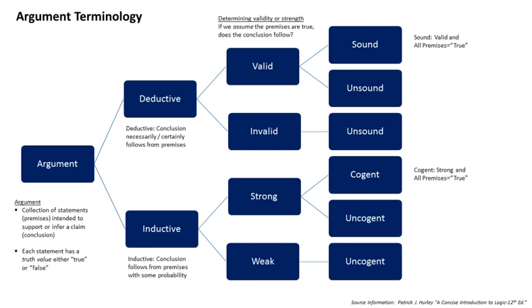If a deductive argument is valid and its premises are all true, then it is also referred to as sound; otherwise, it is unsound, as in the bats-are-birds example. If all its premises are true, then its conclusion must be true. Therefore, it is impossible for the conclusion to be false if all the premises are true.